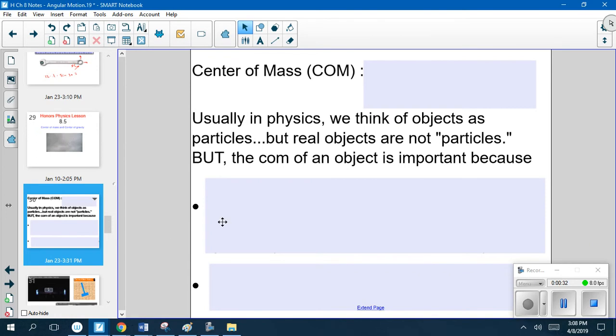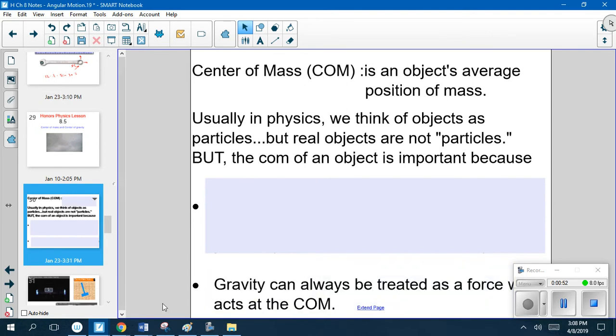All right, so this is going to be where the average position of mass is on an object. Normally we like to think of these objects as particles, so this would be where all the mass kind of goes, so that's where gravity is going to pull. This is most important because the force that's there is always going to be acting at this center of mass.